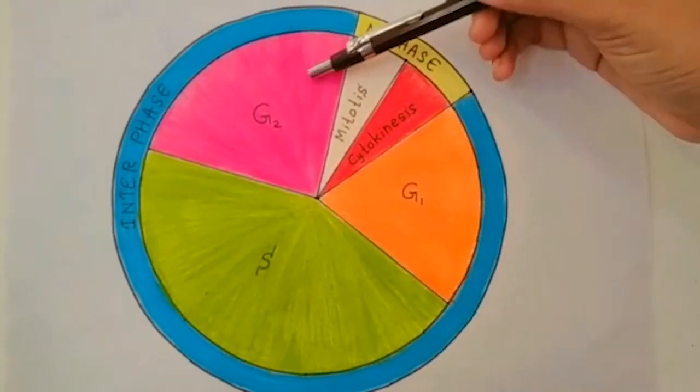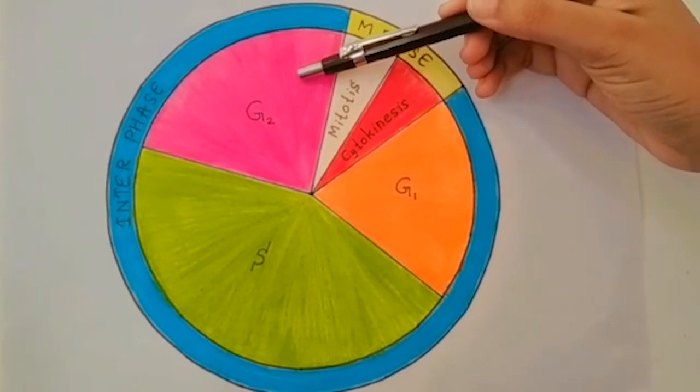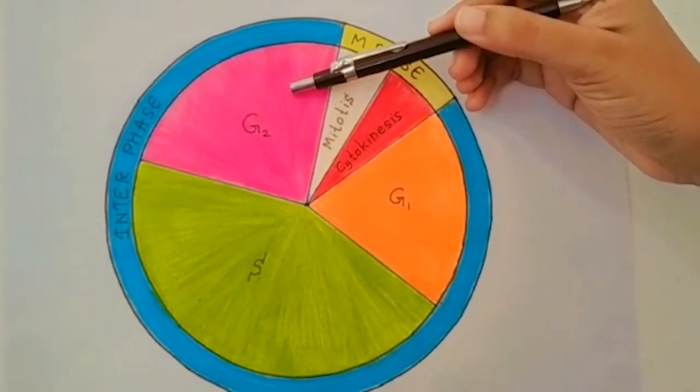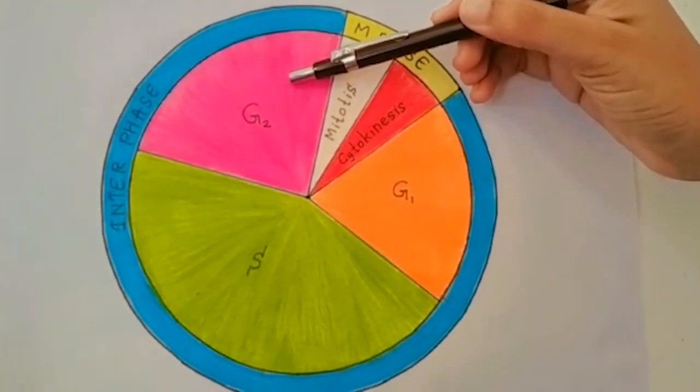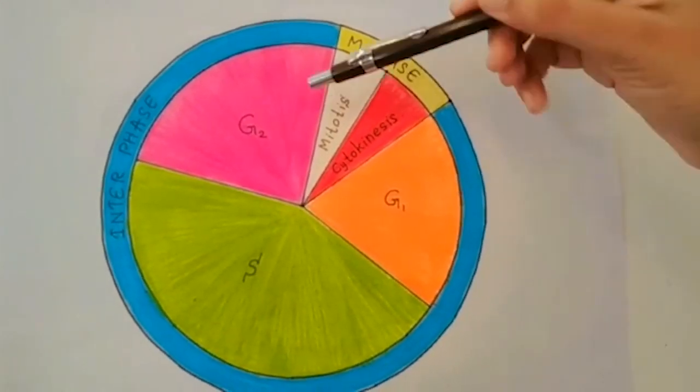Then cells go to G2 phase. The main function of this phase is cell growth. In the G2 phase, cells double-check the duplicated chromosomes and make any needed repairs.